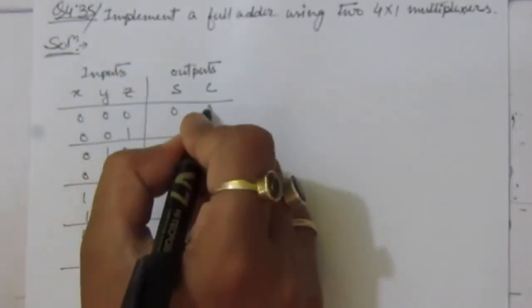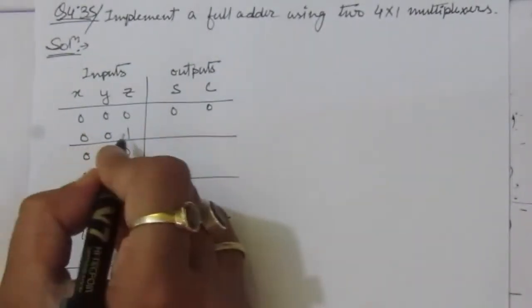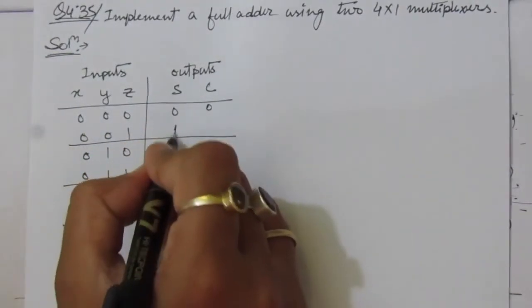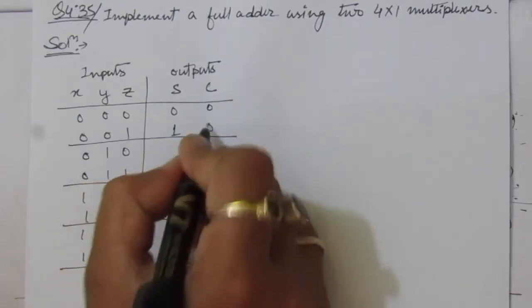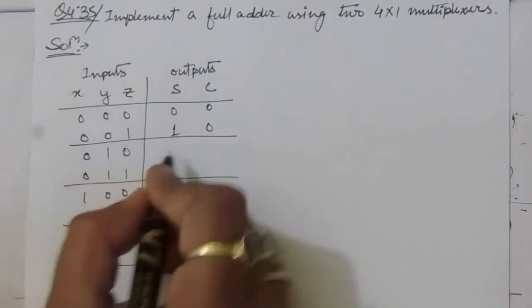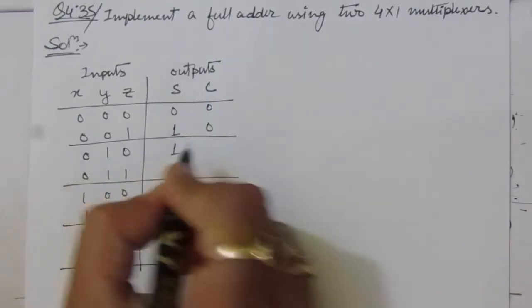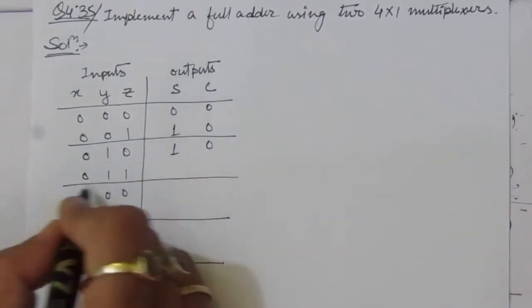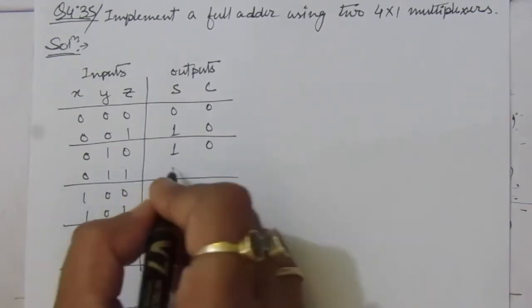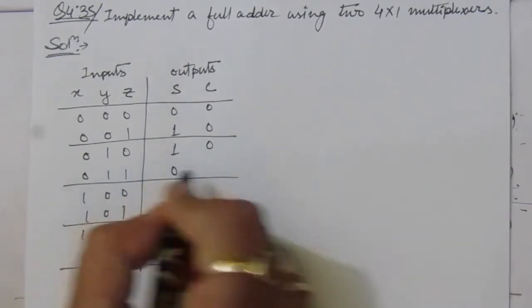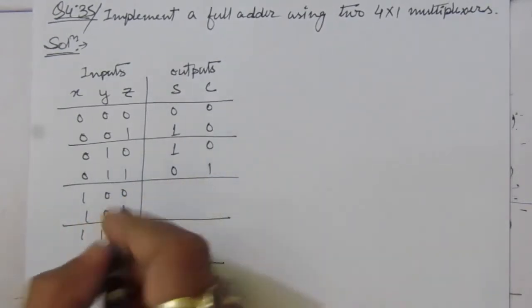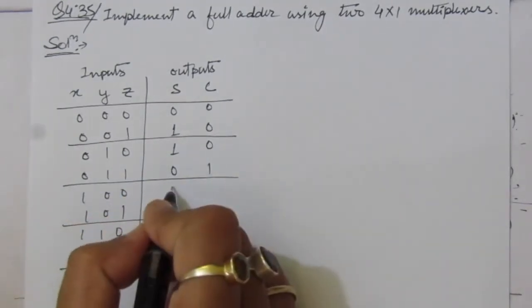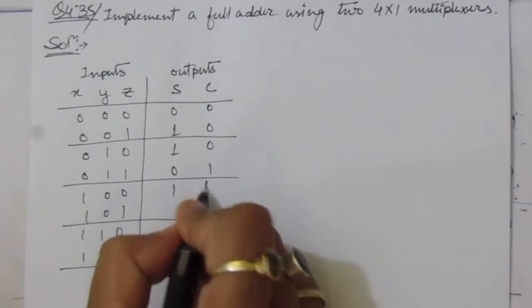0+0+0: sum is 0, carry is 0. 0+0+1: sum is 1, carry is 0. 0+1+0: sum is 1, carry is 0. 0+1+1: sum is 0, carry is 1. 1+0+0: sum is 1, carry is 0.